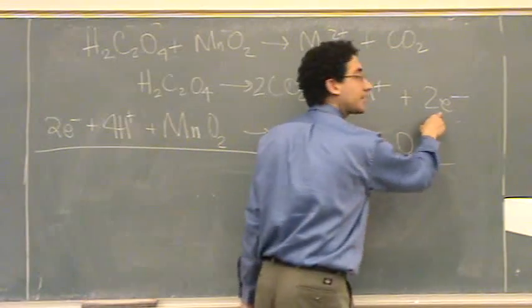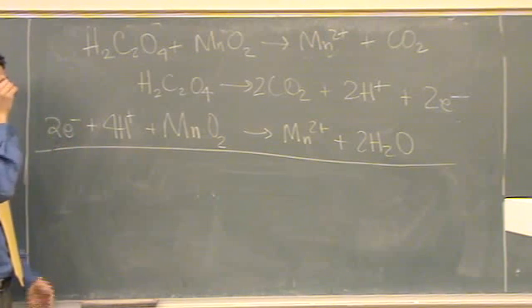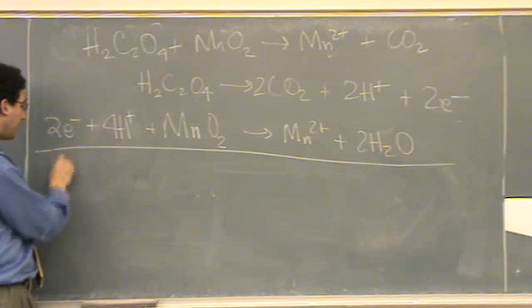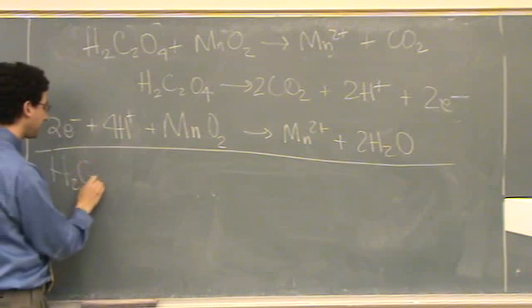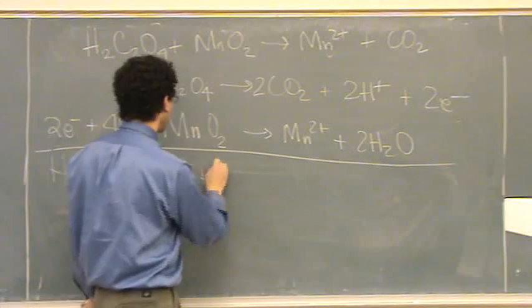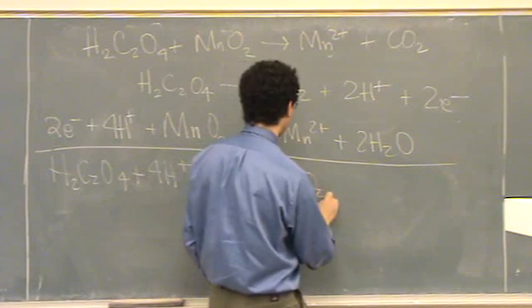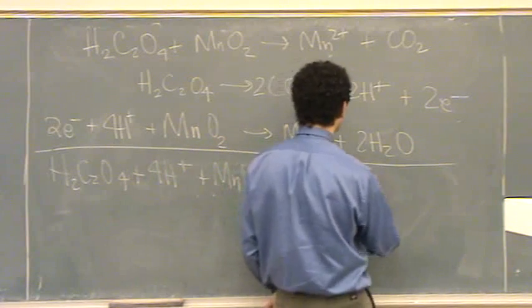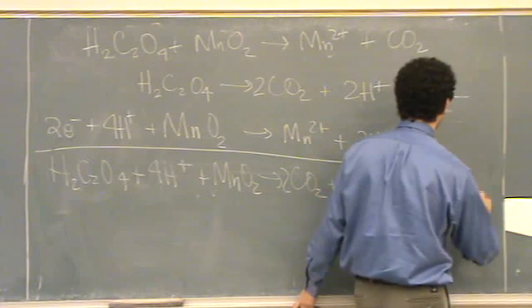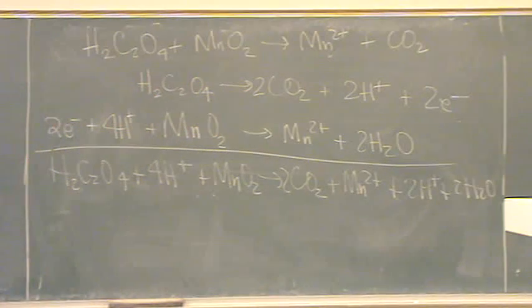We're really lucky because there's two electrons here and two electrons here, so just add up with no multiplication. Oxalic acid plus 4H+ plus manganese four oxide goes to 2CO2 plus manganese two ion plus 2H+ plus 2H2O. If I copied it down right, there we go.